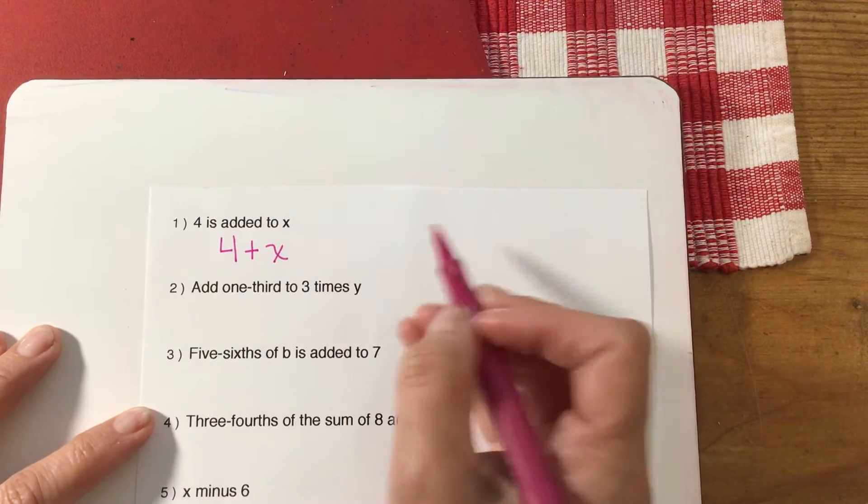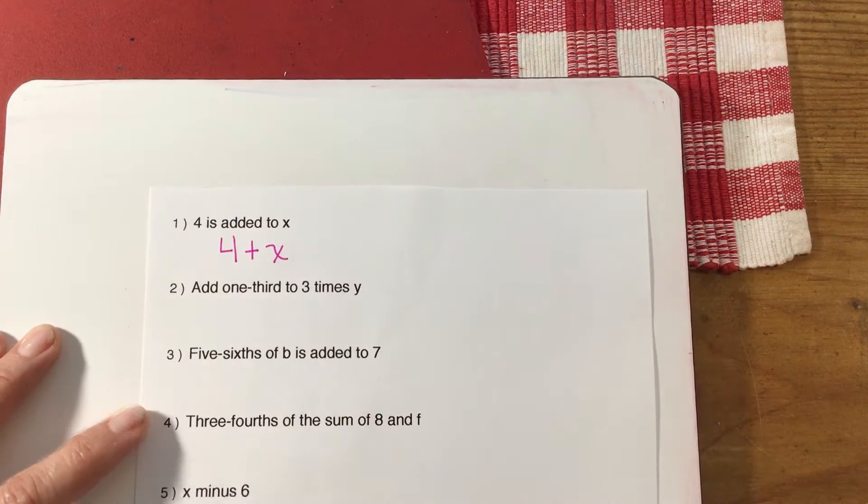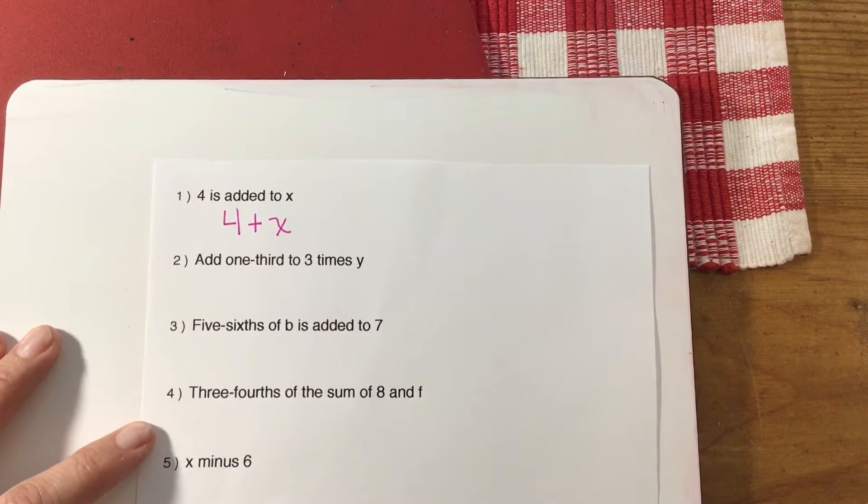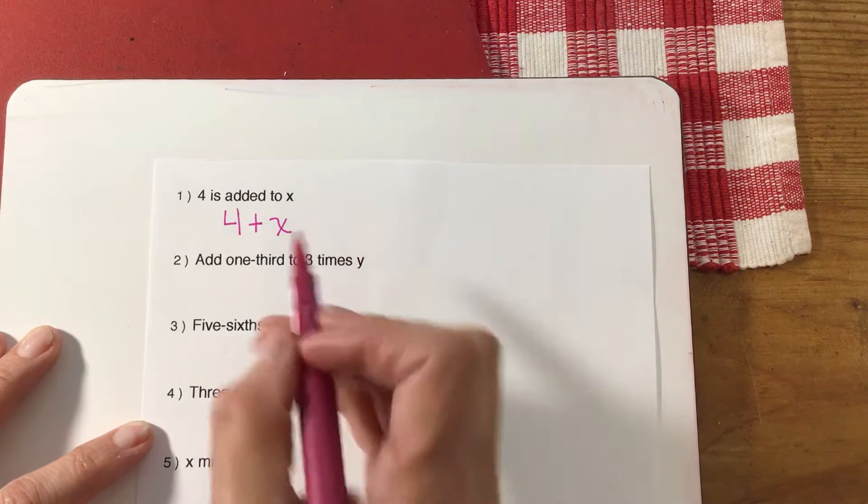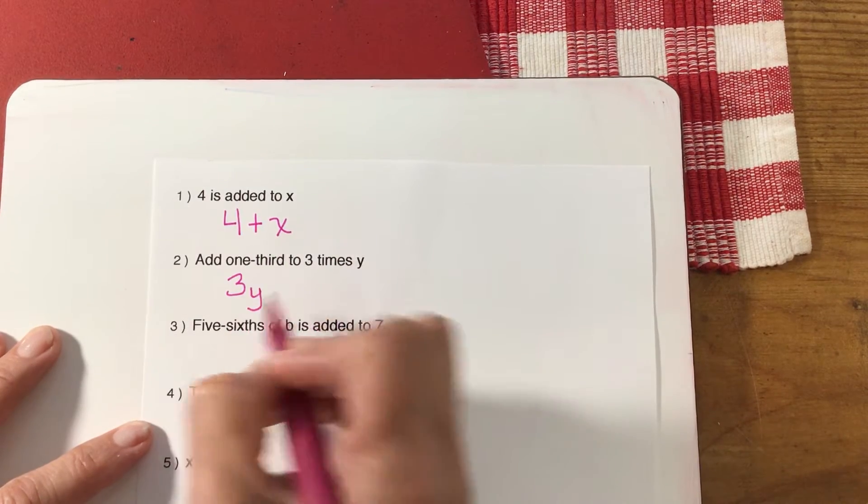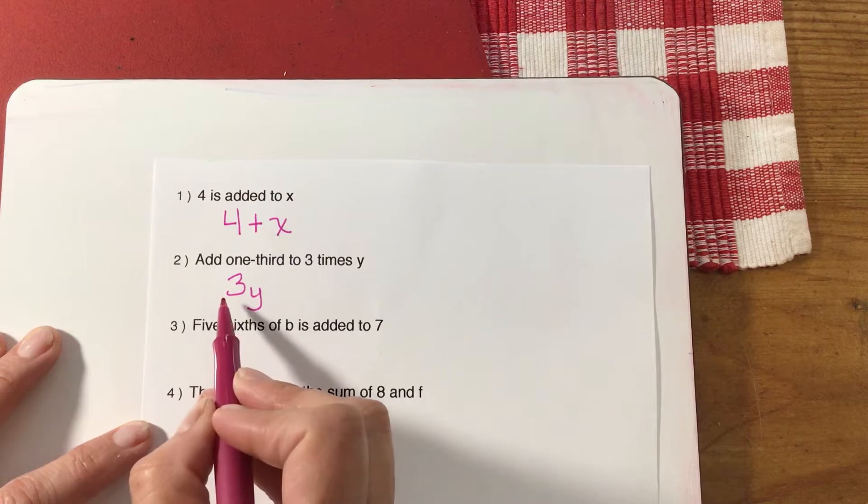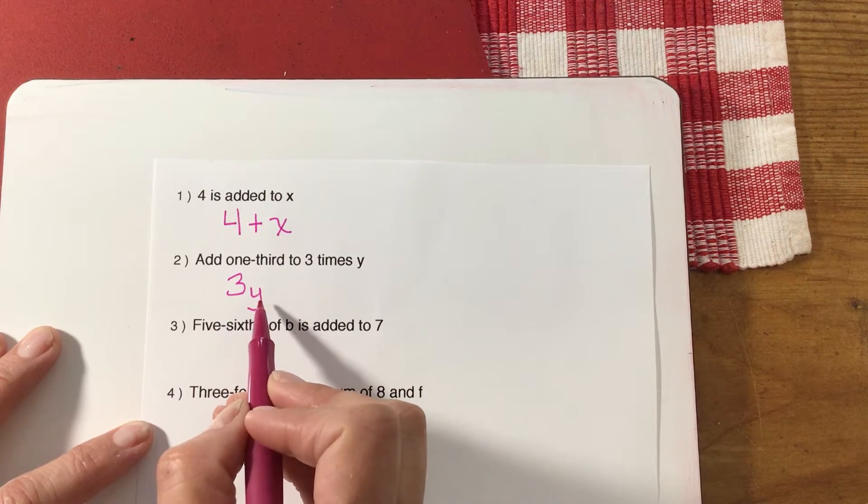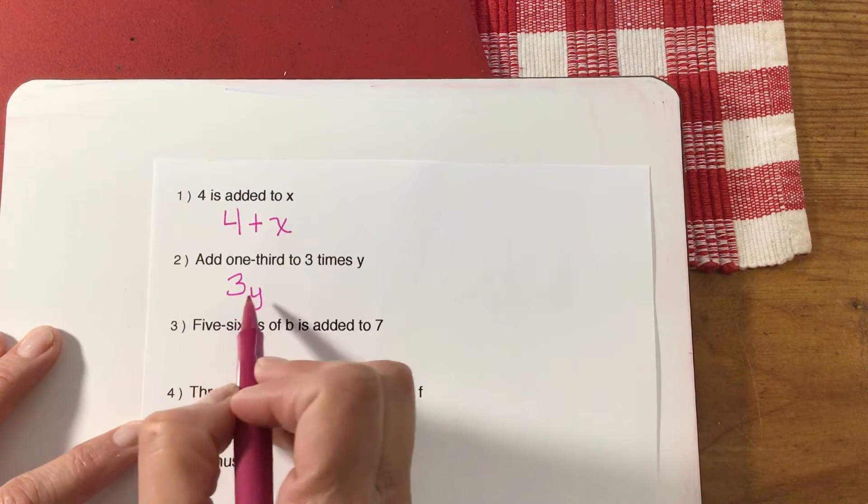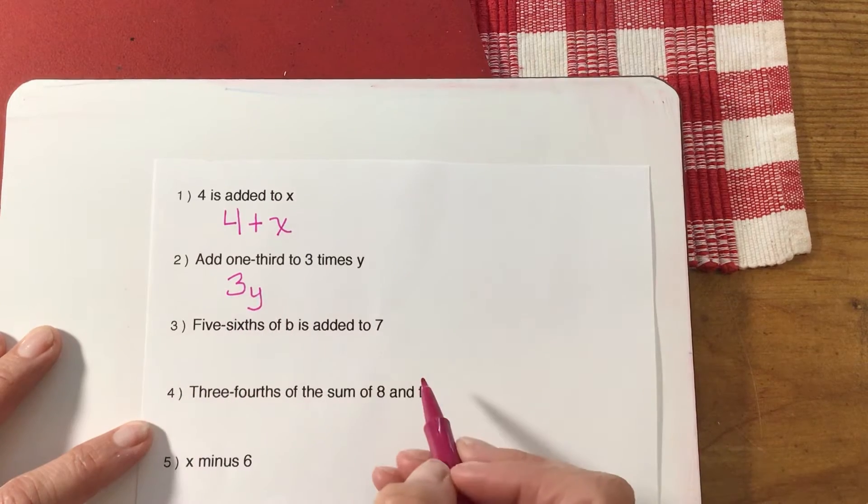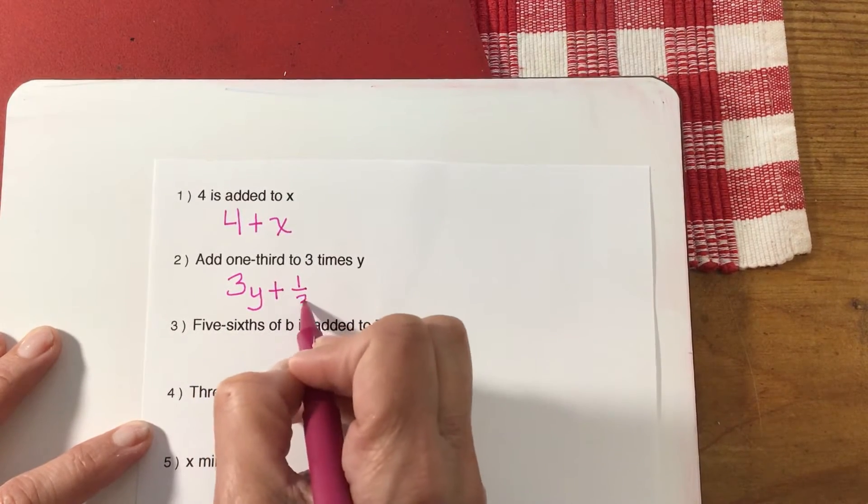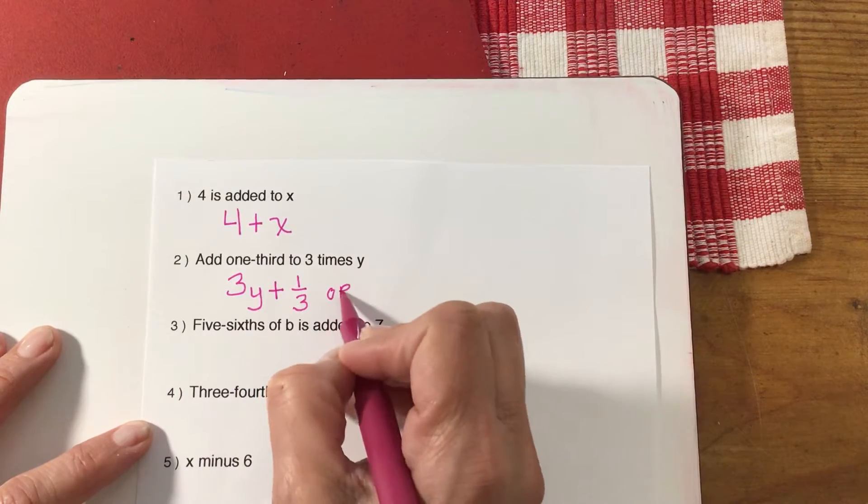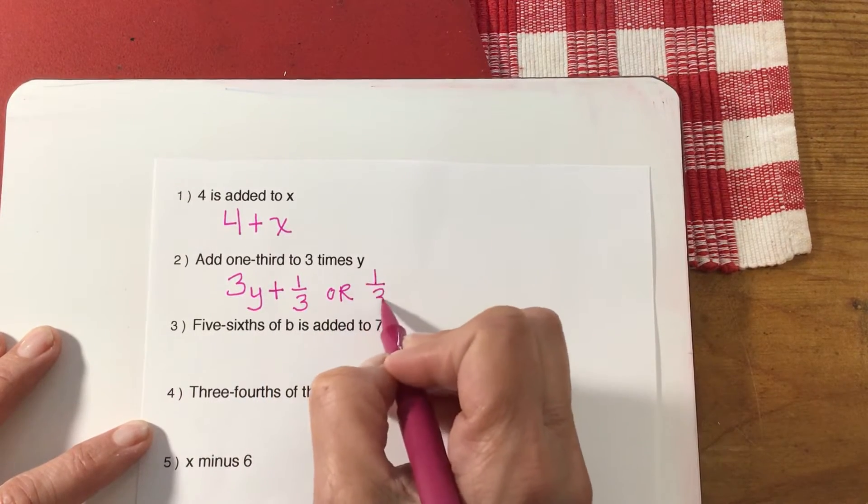Number two: add one-third to three times y. Two different ways you could do this. Here's three times y. Remember we want to show multiplication with the number right next to the letter. We don't want to put in another x for a multiplication sign. I need to add one-third. You could have also written it like this.